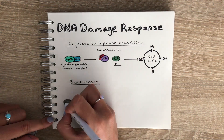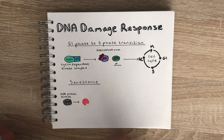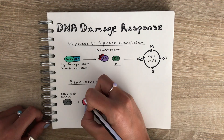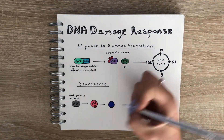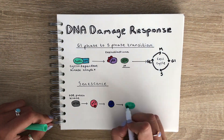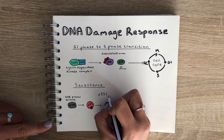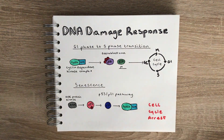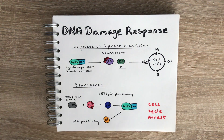During senescence, DNA damage proteins detect DNA damage and this results in the activation of the tumour suppressor protein P53. P53 activation leads to the upregulation of P21, which leads to inhibition of the cyclin dependent kinase complex and ultimately cell cycle arrest. There is also a P16 pathway linked to senescence, which often acts as a second barrier to prevent growth in cells with severely dysfunctional telomeres or DNA damage.